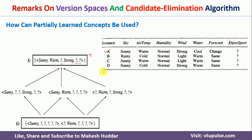Going through the remaining hypotheses for the first example: sunny and strong match; sunny and warm match; warm and strong match; sunny matches; warm matches. All six hypotheses classify this first example as yes, so we can say this example is classified as yes.